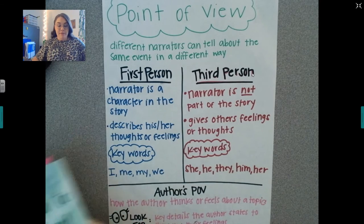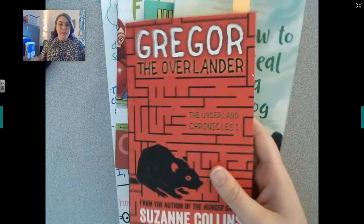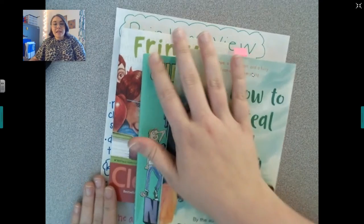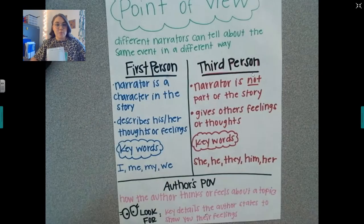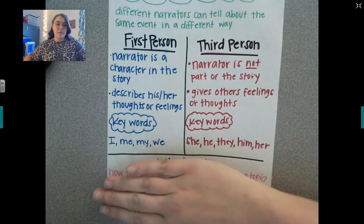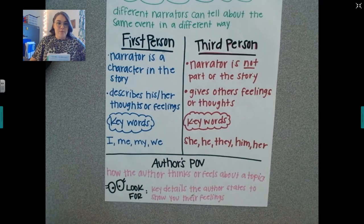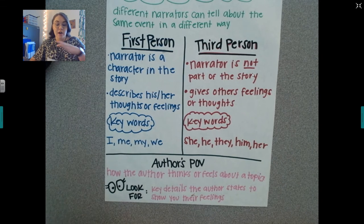We have read a total of three novels this year and we are reading Gregor the Overlander right now. But those three novels were written all from different perspectives. So you have a choice between first person and third person. First person is when the narrator is in the story — they are a character in the story.